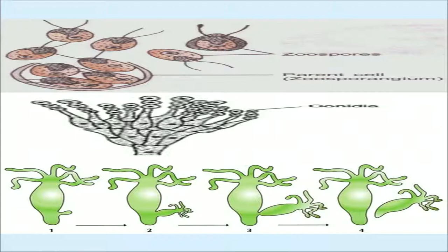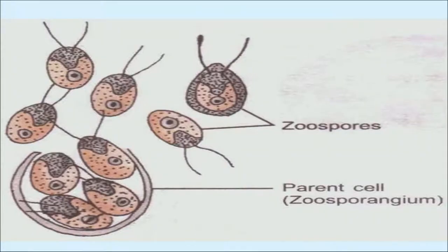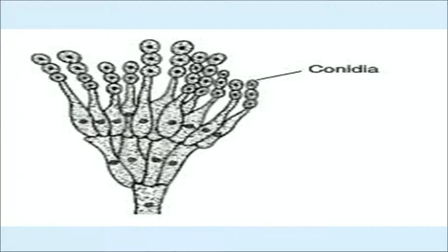In the pictures shown: the first depicts zoospores — the parent cell is called the zoospore enzyme — seen in Chlamydomonas. The second picture shows conidia seen in Penicillium. The third picture depicts budding in Hydra, where a larger and a smaller part are visible; the smaller part detaches and develops into a new organism. Organisms also reproduce by special asexual reproductive structures like zoospores in Chlamydomonas, conidiospores in Penicillium, and gemmules in sponges.